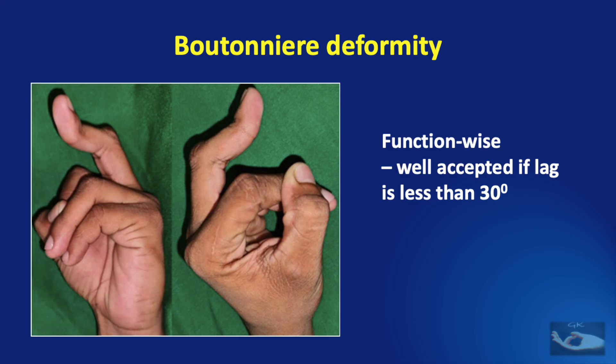This picture shows a classic boutonniere deformity with flexion at the proximal interphalangeal joint and hyperextension at the distal interphalangeal joint. It is important to note that the boutonniere deformity is well accepted if the lag at the proximal interphalangeal joint is less than 30 degrees. So why surgery at all for boutonniere deformity?